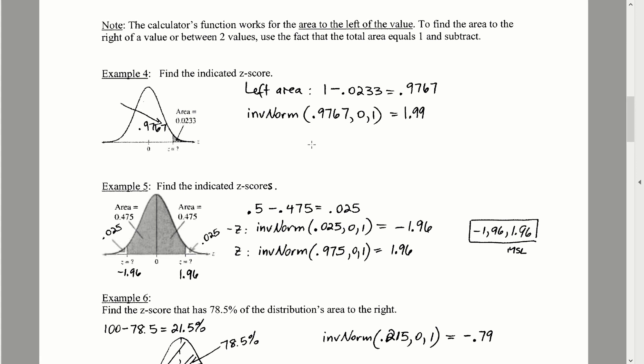One important thing to be careful about: whenever you're using the inverse normal function to find a z score — or later an x value — the area you plug in must always be the cumulative area, meaning the area to the left of the given value.